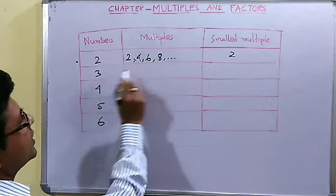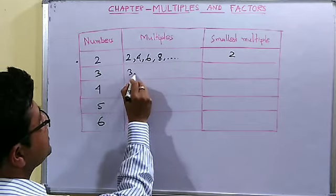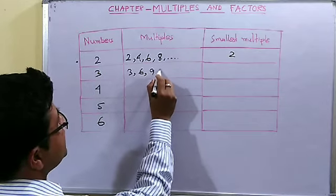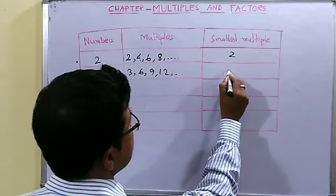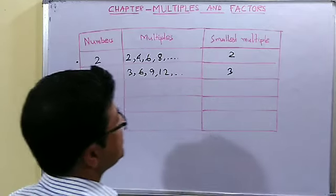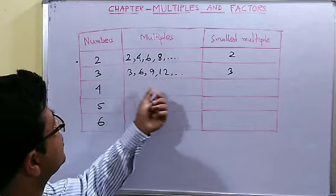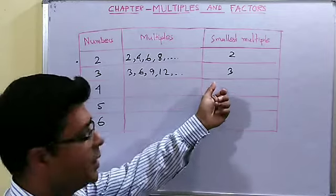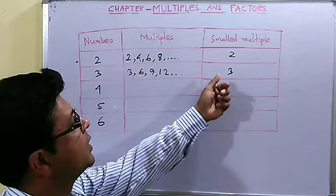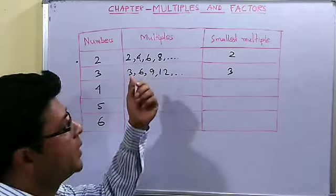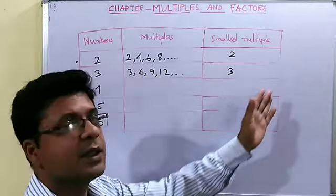Now let us write the multiples of 3: 3, 6, 9, 12. Which is the smallest? 3. There is a reason we are writing all this — we have to know what is the smallest multiple of a number. We are observing that the smallest multiple of a number is the number itself and the largest one is endless.